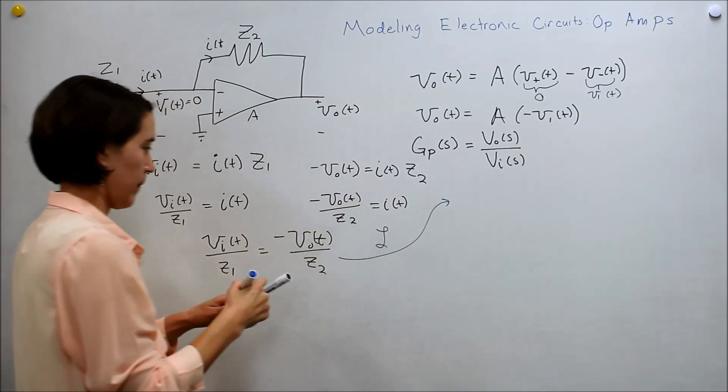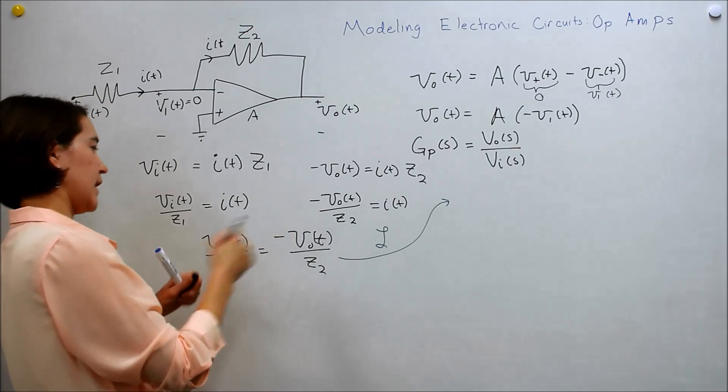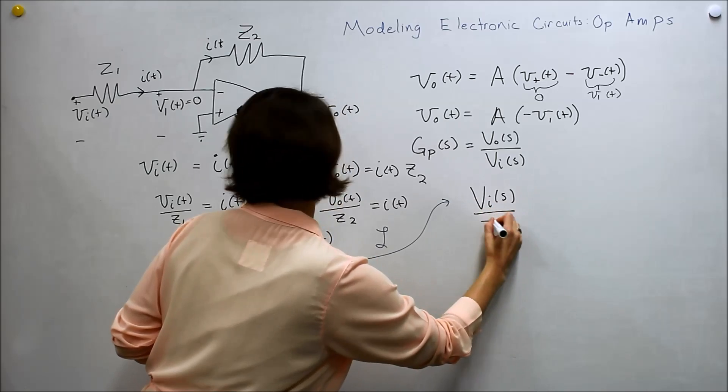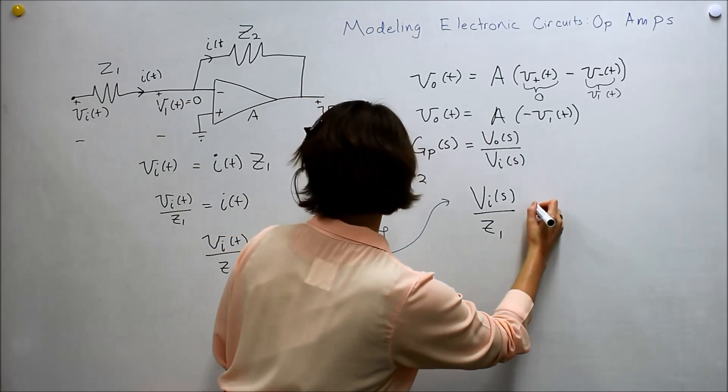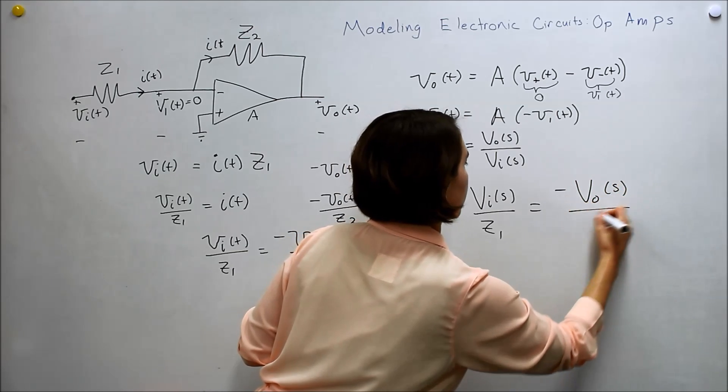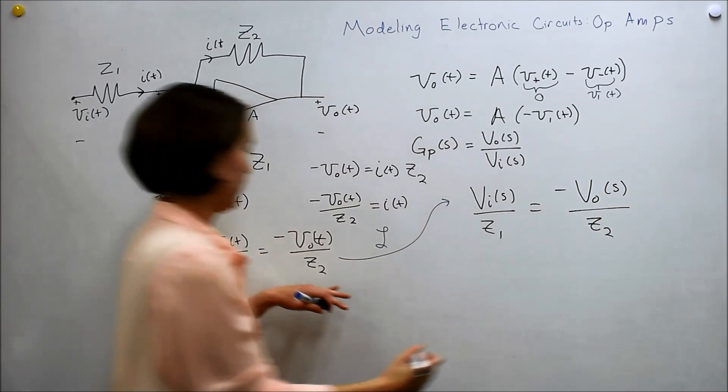And we'll get V I of S over Z1. And then that's equal to negative V out of S over Z2. We're almost there.